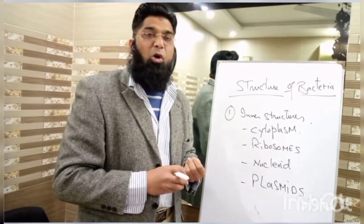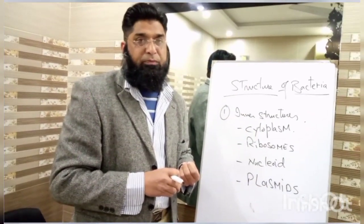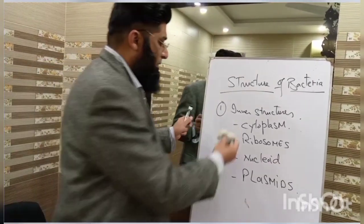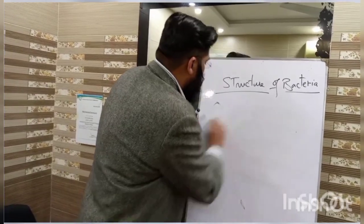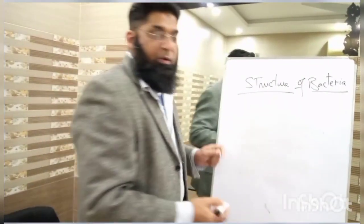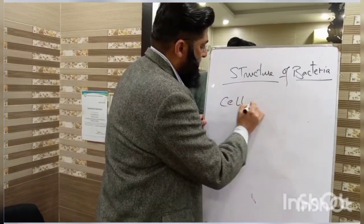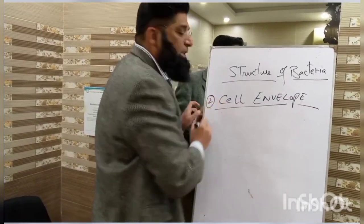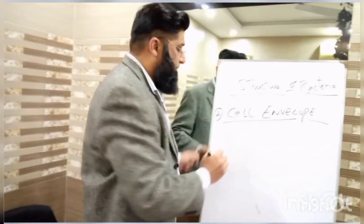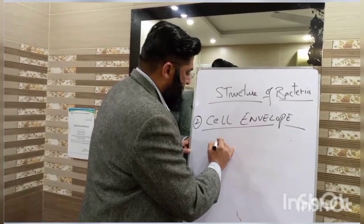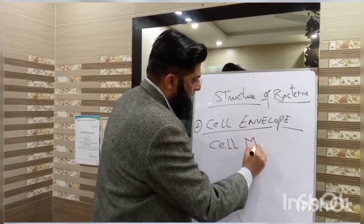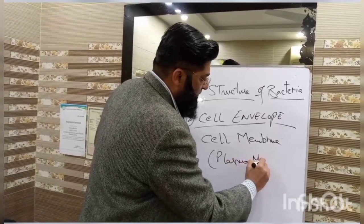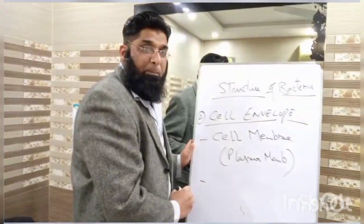Ribosomes and plasmids are responsible for virulence of a bacterial cell inside the host. Now we proceed to the second component — after internal structures, we move towards the bacterial cell envelope. This second component of bacterial structure contains: number one, cell membrane or plasma membrane; number two, periplasmic space; number three, cell wall.